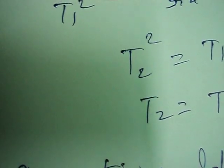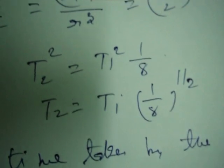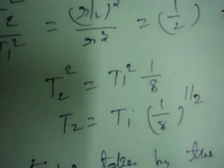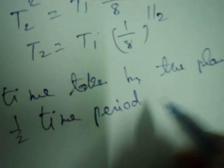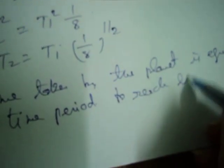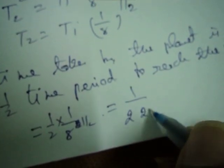The time taken by the planet to reach the sun is equal to half of T2. That works out to one half times (1/8)^(1/2) times T1, which simplifies to square root of 2 divided by 8 times the time period T1. This completes the proof.